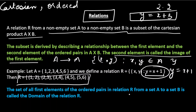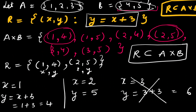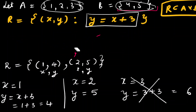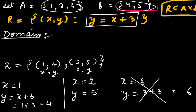The set of all first elements of the ordered pairs in relation R from set A to set B is called the domain of R. Now let's study domain and range. Domain is all the values of x. So here the values of x are 1 and 2, so the domain of this relation is {1, 2}.